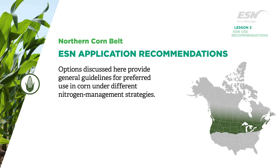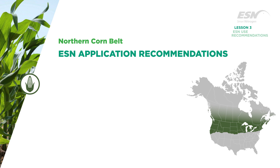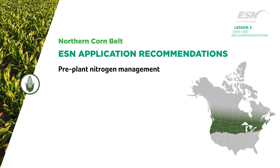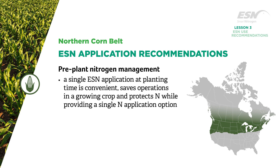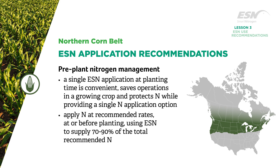For pre-plant nitrogen management in northern geographies, a single ESN application at planting time is convenient and saves operations in a growing crop, as well as protects nitrogen while providing a single N application option. Be sure to apply N at recommended rates at or before planting, using ESN to supply 70 to 90 percent of the total recommended N.